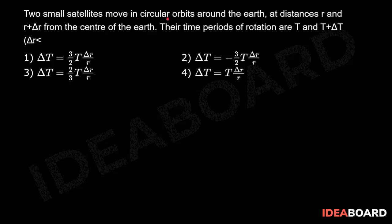Two small satellites move in circular orbits around the Earth at distances r and r+Δr from the center of the Earth. Their time periods of rotation are T and T+ΔT, where Δr is less than r.